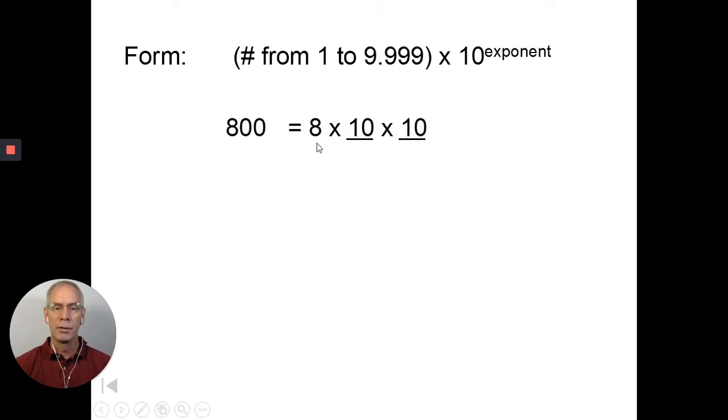So 800 for instance is equal to 8. See, 8 is between 1 and 10 times 10. That'd be 80 times 10. And the way we write that is 8 times 10 squared, or 800. So 800 or 8 times 10 squared means the same thing. This is standard notation. This is scientific notation.